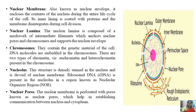The nucleolus is a densely stained structure in the nucleus and is devoid of a nuclear membrane. Ribosomal RNA is present in the nucleolus in the region known as the nuclear organizer region, which is rich in rRNA. Nuclear pores are present on the nuclear membrane and help in establishing communication between the nucleus and cytoplasm.